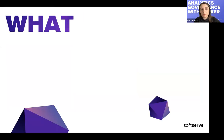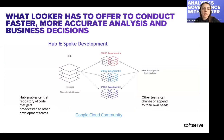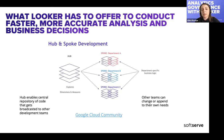So what can Looker offer to conduct faster, more accurate analysis and business decisions? You may have heard the term hub and spokes in different technologies — for each technology it might mean something unique, but the basic concept is the same. The hub is about controlling the central piece of information. Spokes are consumers of the hub's information; they can enrich it, change it to their own needs, and extend it — but they cannot push changes back upstream to the hub.